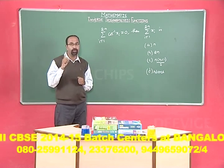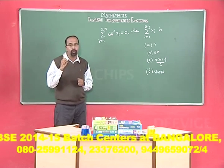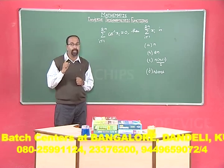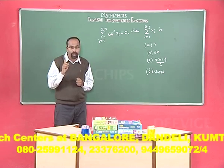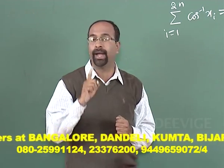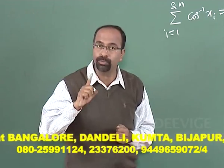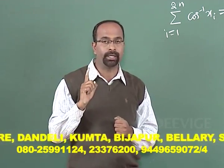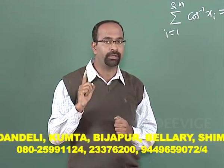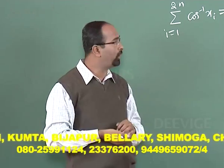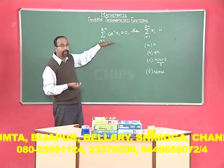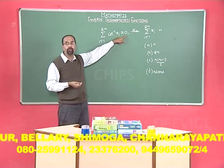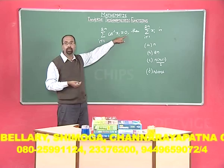Before solving this problem, you must know one basic thing about the cos⁻¹ function: the least value of cos⁻¹(x) is 0, and it is always positive — no doubt the upper limit is π, but cos⁻¹(x) is always non-negative. Whatever you are adding will never become 0 if it is more than 1 term.